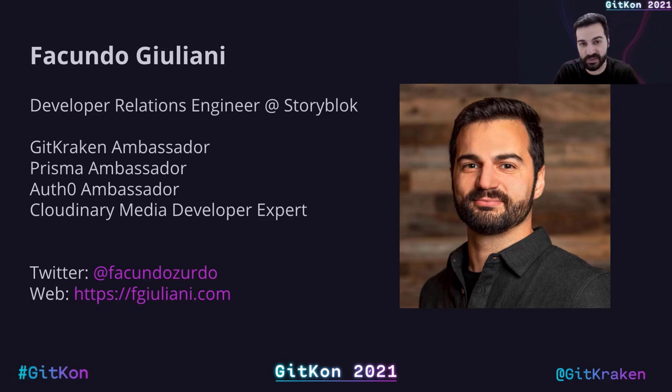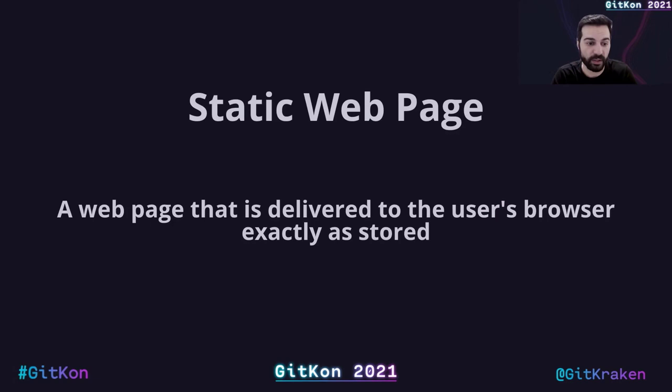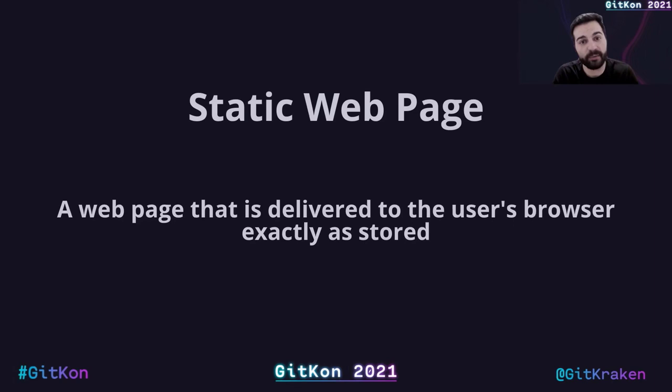Let's start with the definition. Let's talk about static web pages, which are pages that are delivered to the user's browser exactly as they are stored in the web servers. We talk about static web pages when we have HTML content, CSS files, and JavaScript code, and we deliver the same files to every user that visits our website — no change there. The code and files will always be the same, delivered as stored in the web server to the browser.